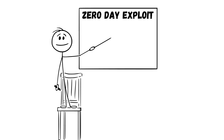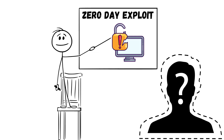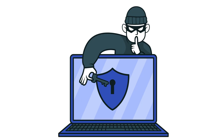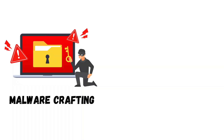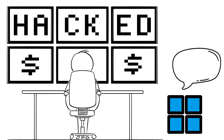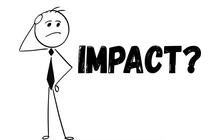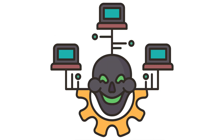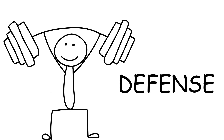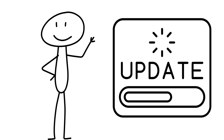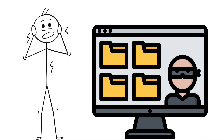Method 4: Zero-Day Exploits. A zero-day is a software vulnerability unknown to the vendor. Example: a flaw in Windows' Print Spooler — hackers craft malware exploiting it before any patch exists and spread it before Microsoft even knows it's vulnerable. Critical infrastructure like hospitals and power grids are prime targets. Defense: update software immediately when patches drop.